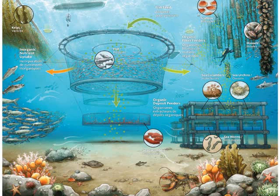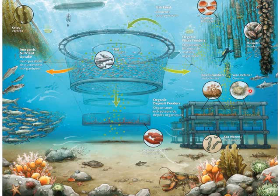We also have inorganic filter feeders — the seaweed, in this case the kelp. But we also have the deposit feeders: everything that is on the bottom of the ocean floor — the sea cucumbers, the sea worms, and also sea urchins. Those are deposit feeders.